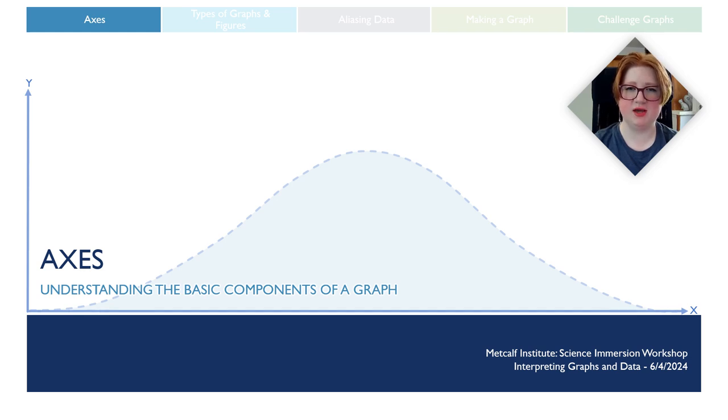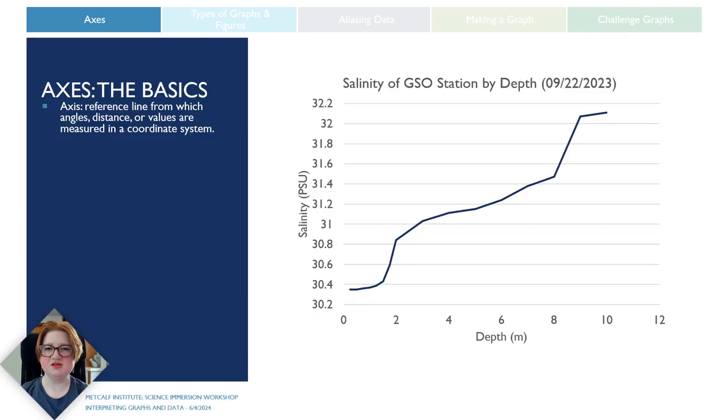Here's another example of a graph. This is much more simple than the one I showed from the IPCC. The data for this was collected off the coast of the University of Rhode Island's Bay campus. We lowered a sensor into the bay, stopping at specific depths and recording the salinity. Depth was measured in meters, and salinity was measured in practical salinity units. With this data, we can link the depth of the bay to the salinity of the water.